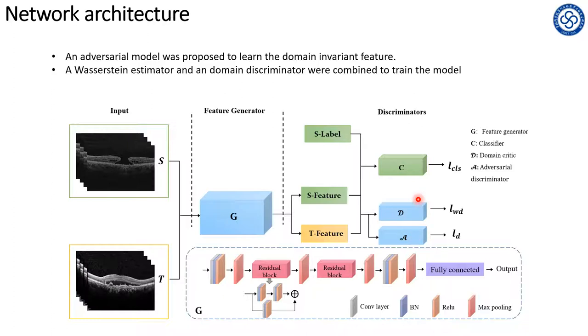The D was used to estimate the Wasserstein distance between source and target domain and provide stable gradient, and the A was used to monitor the domain discrepancy directly to help the convergence of the model. This combination can better monitor the distance between feature representations while avoiding the gradient vanishing problem.